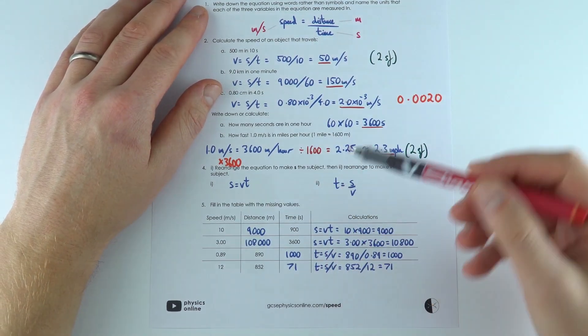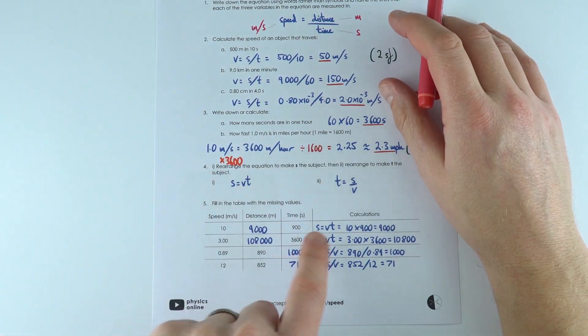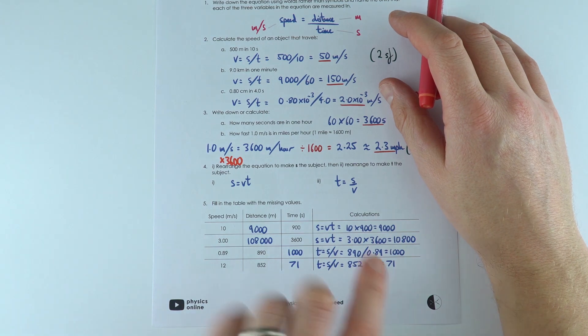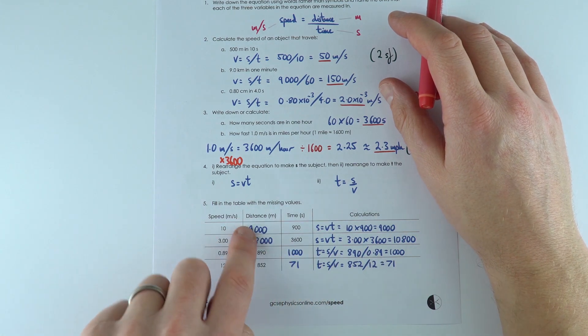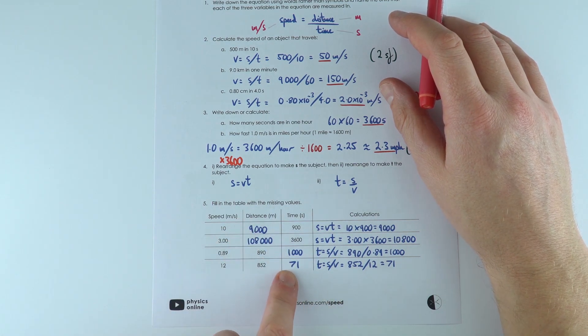We've rearranged the equation for the next part and then just put the numbers in to get the answers, which are displayed in the table.